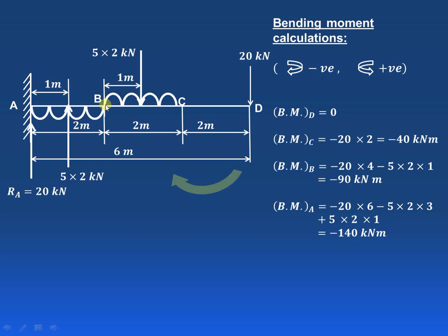At point B, the 20 kN force again produces a clockwise moment, but the distance from D to B is 2 plus 2, that is 4. So it is minus 20 into 4. Then the UDL of 5 into 2 is allowed to act at the center of the 2 meter length, that is 1 meter distance, also producing a clockwise moment. So 5 into 2 into 1 gives 10 kN meter. The total bending moment at B is minus 90 kN meter.